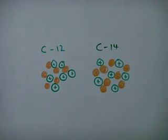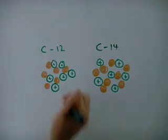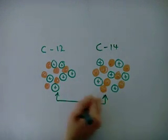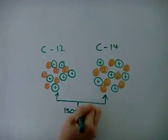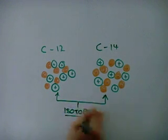Isotopes of an element, such as carbon, have the same number of protons and electrons, but differing numbers of neutrons in the nucleus. Carbon-12 has 6 neutrons, whereas carbon-14 has 8.